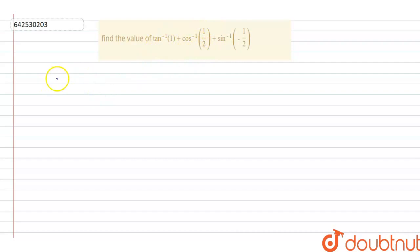given that tan inverse 1, so tan inverse 1 can be written as tan inverse tan pi by 4, which equals pi by 4. And now again here,